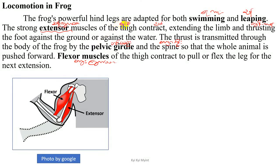The frog's powerful hind legs are adapted for both swimming and leaping. The strong extensor muscles of the thigh contract, extending the limb and thrusting the foot against the ground or against the water.